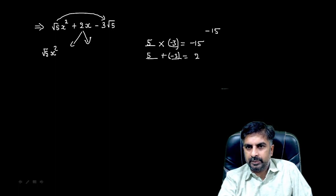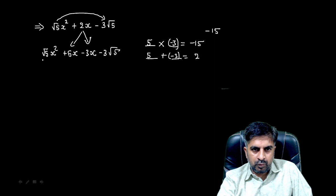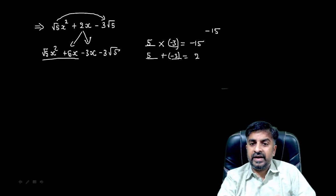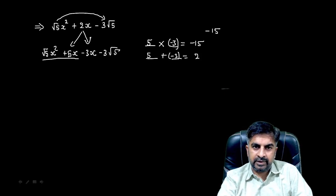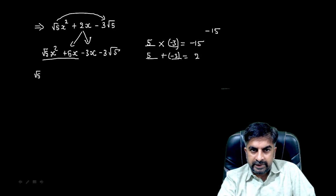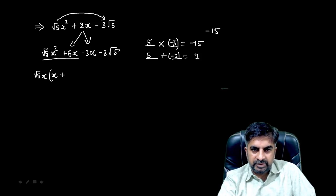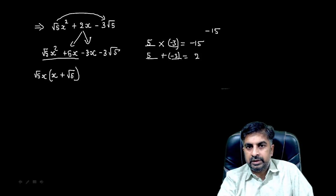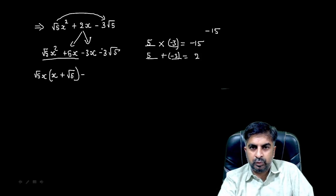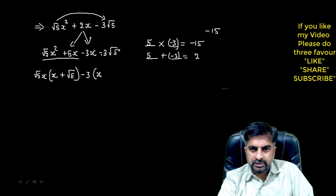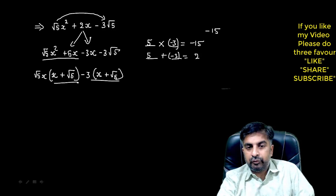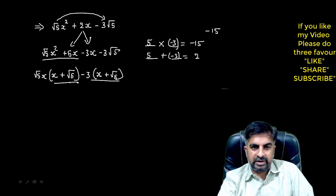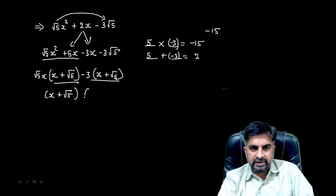Here you cannot use the direct shortcut method because the coefficient of x² is not 1 — that method only works when the coefficient is 1. So: √5·x² with the middle term split as plus 5x minus 3x, minus 3√5. Now taking common from the first pair — the factors of 5 are √5 × √5, so take out √5 and x as common, giving √5·x(x + √5). From the second pair, both terms are negative, so take out minus 3 as common, giving minus 3(x + √5). Both brackets are the same, so the factors are: x + √5 and √5·x minus 3.